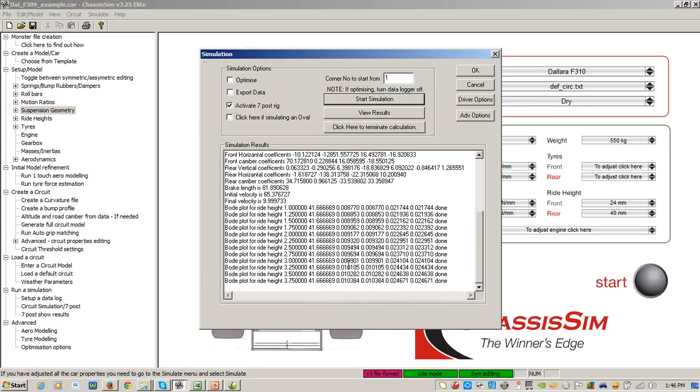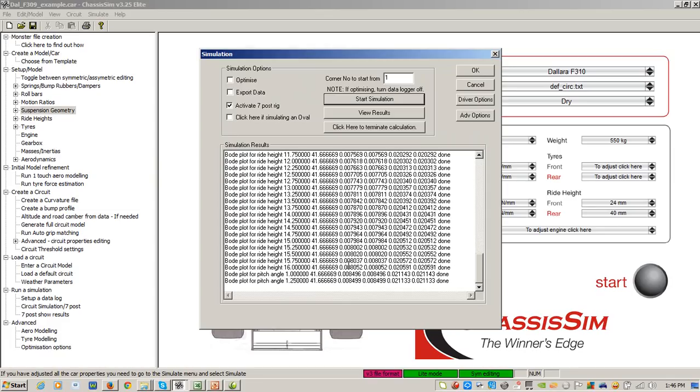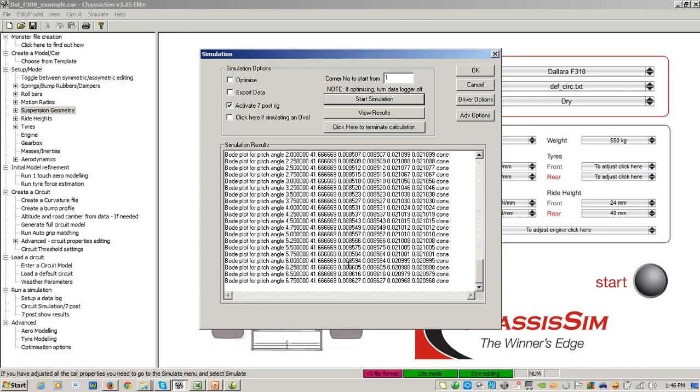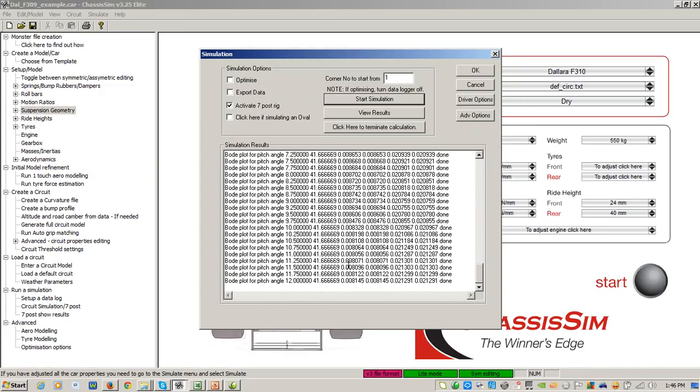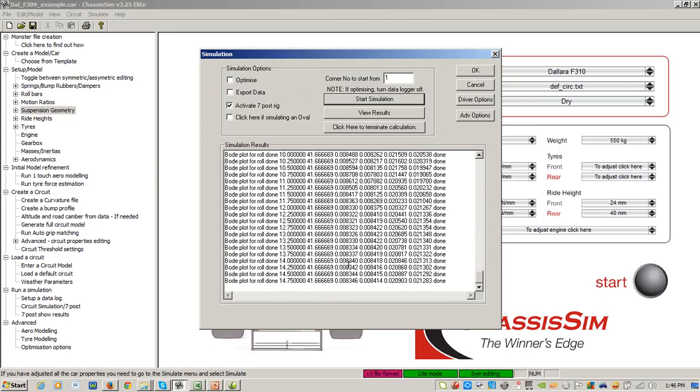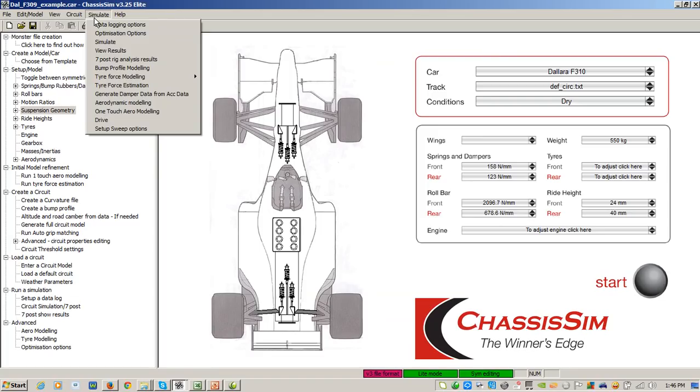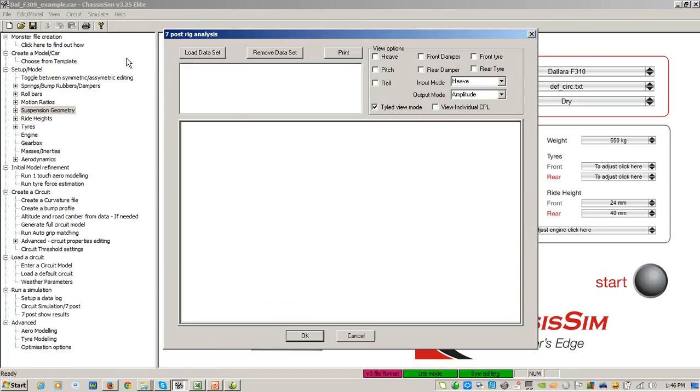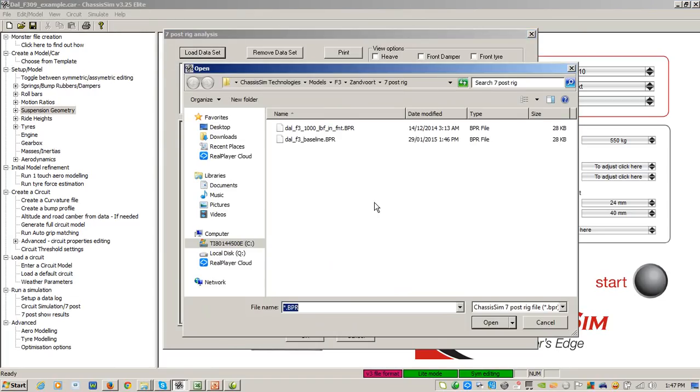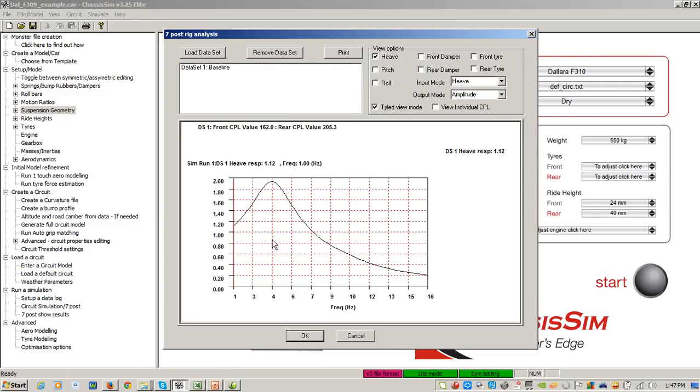I'm going to click on OK to run the simulation. And now, what's going to happen is it's going to go through and do a fixed velocity shaker rig run for heave, pitch and roll. And so it's just going to go through, do its bits and pieces. And when it's done, you'll see now file output done. So what I'll do is click on Cancel there. And now what I'm going to do to look at that, I go to Simulate, 7 Post-Rig Analysis Results. I'll click on Load Dataset. And I'll click on my baseline. And I'll click on Heave. And there you go.